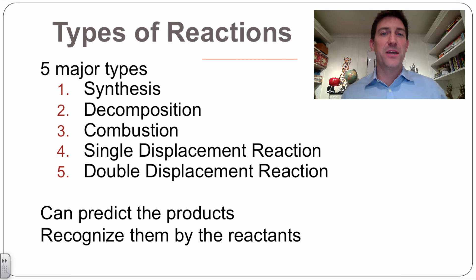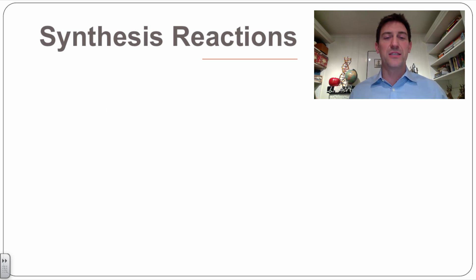We're going to look at the five major types of reactions. We've got synthesis, decomposition, combustion, single displacement and double displacement, which are also called single replacement and double replacement. We're going to find out if we can predict these and recognize them just by their reactants.